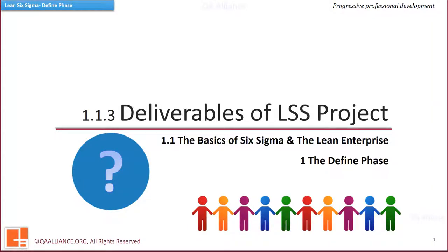Welcome back. So far, we have seen what is the meaning of Six Sigma and Lean, how they evolved over time. In the first unit we also saw D-MAIC at a glance.